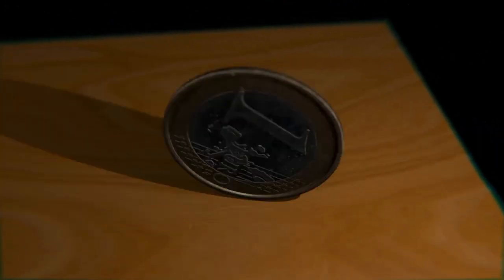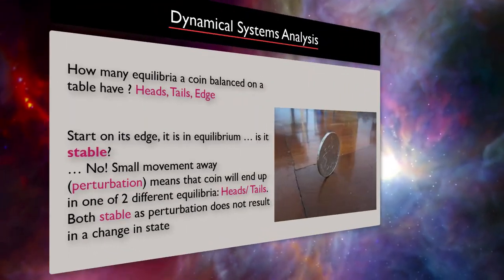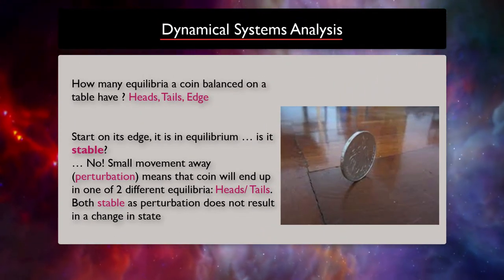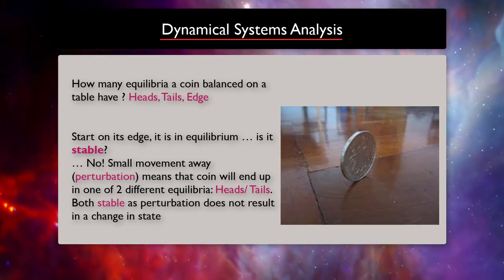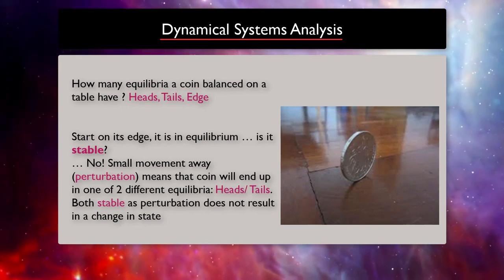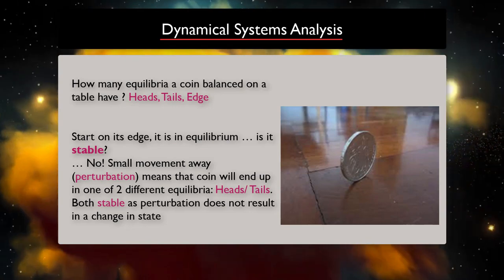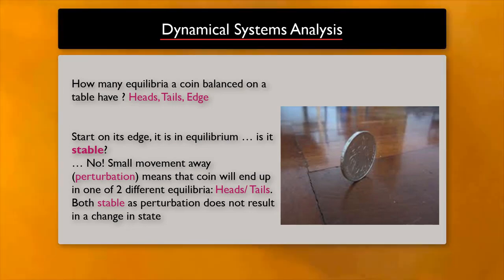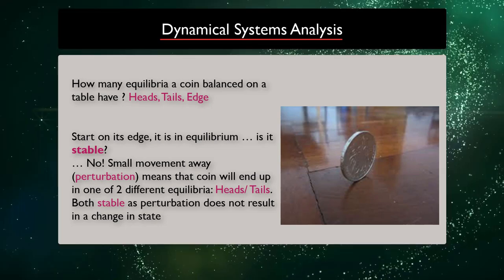So let's start with something you can test right now. Try to balance a coin on a table. In how many ways you can do that? I personally cannot do it in more than two ways, but there is a third one: head, tails, and edge.